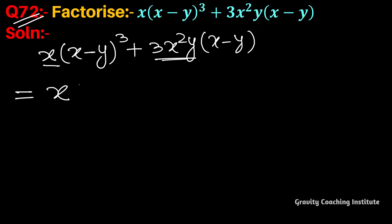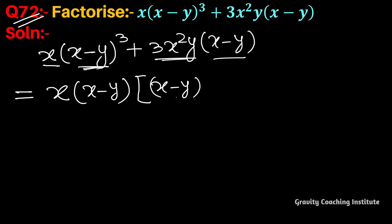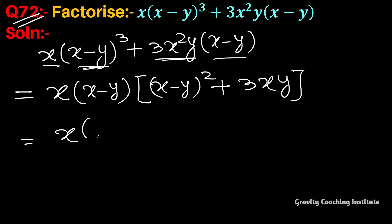So (x minus y) is common — in the first term x minus y appears 3 times giving (x minus y) whole cube, and in the second term x minus y appears once. So (x minus y) is the common factor, giving (x minus y) whole square from the first term. In the second term, x is also common.